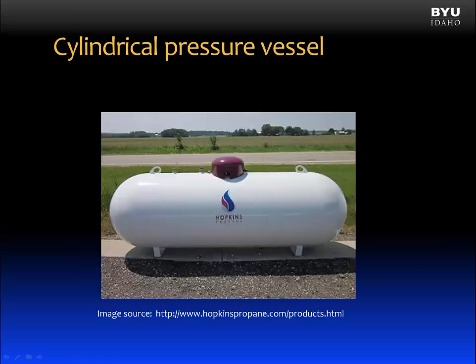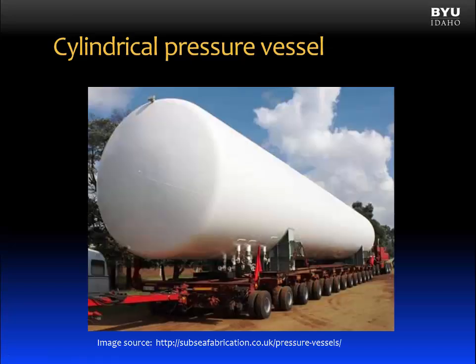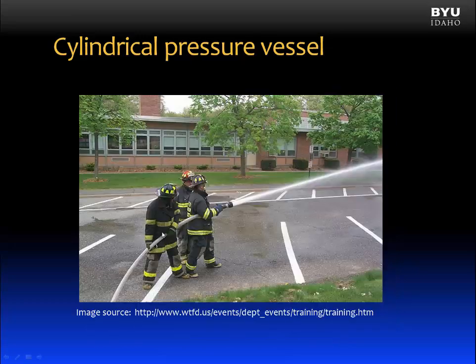So what's a thin-walled pressure vessel? Here is a commonly seen pressure vessel — a propane tank. It is a cylindrical vessel with two spherical end caps. Here's another example of a cylindrical pressure vessel, much larger than the previous example. A fireman is not a pressure vessel, but the hose they're using behaves in some ways like a cylindrical pressure vessel.